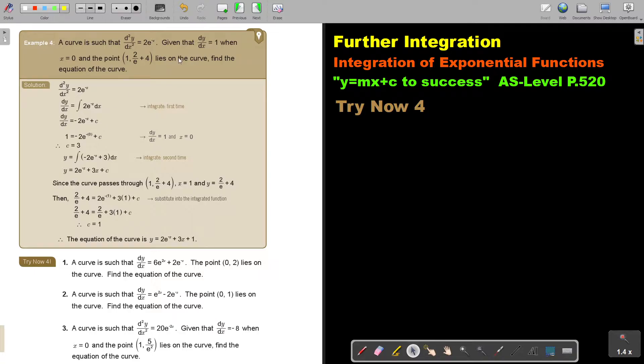Now I see they gave me dy/dx is 1, so I put a 1 there. And I also gave me x is 0, so I put a 0 there. Then I work it out. This is e to the power of 0, so it's negative 2. If it goes over, it becomes plus 2, and c is equal to 3.